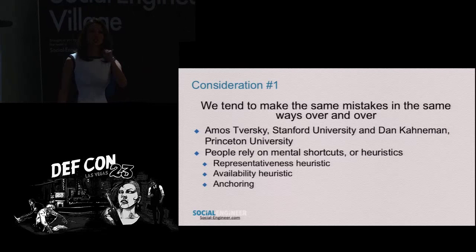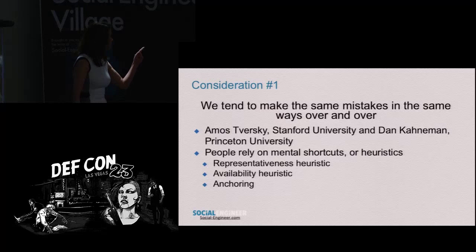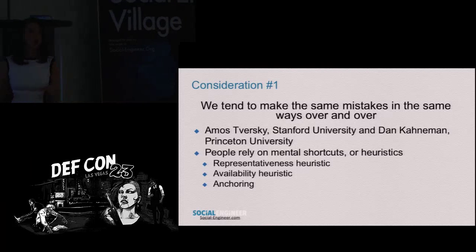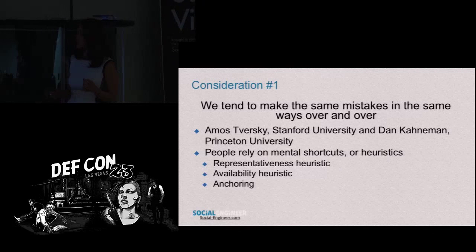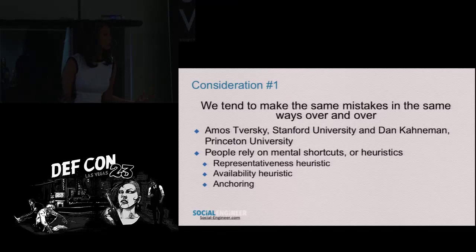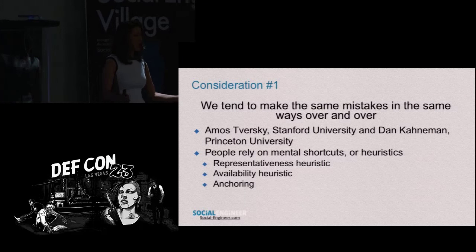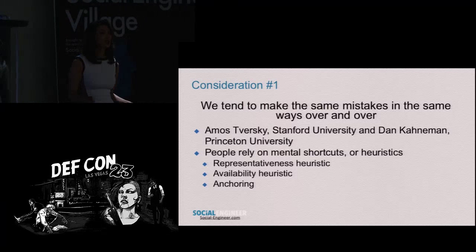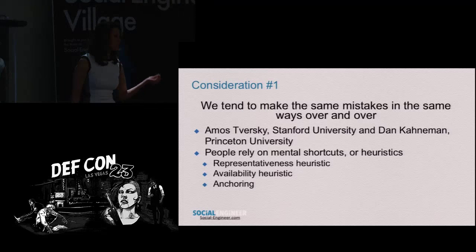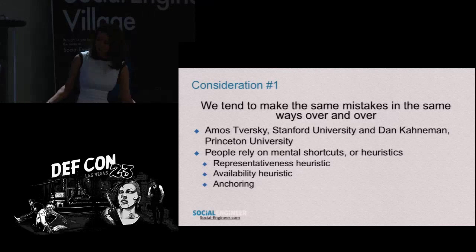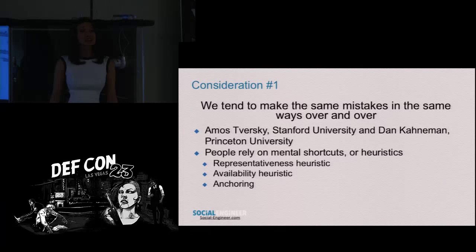So I have four considerations for you as social engineers. The first is that we tend to make the same kinds of mistakes over and over in the same kinds of ways — which means we are predictable in our decision-making process. Tversky and Kahneman are sort of the granddaddies of decision-making. What they have basically come up with is this idea that people use shortcuts. We all take shortcuts in our decision-making process. It makes life a lot easier, and most of the time we don't die when we do it.